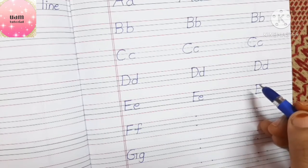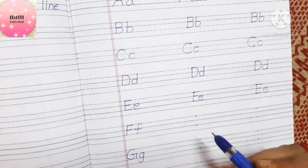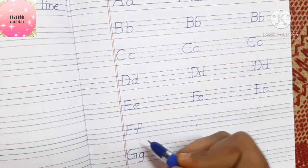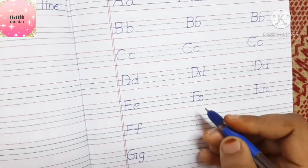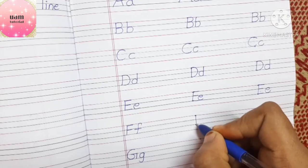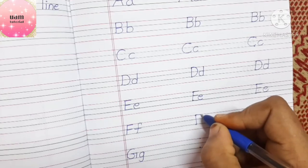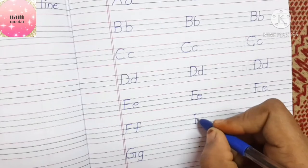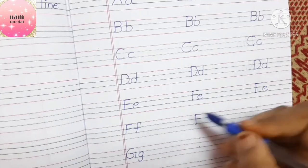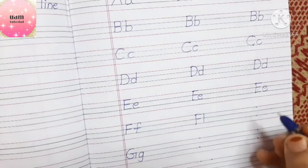Words starting with E: elephant, egg. Now the letter F — capital F and small f. For capital F: write a standing line from first to third line, then a sleeping line on the first line and another sleeping line on the second line — one standing line and two sleeping lines.